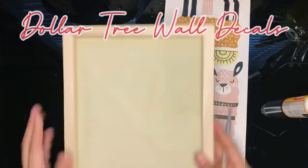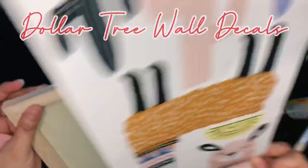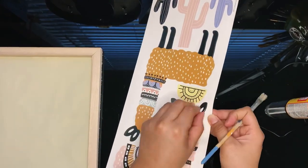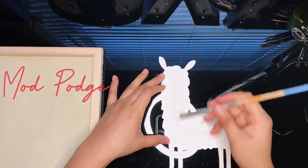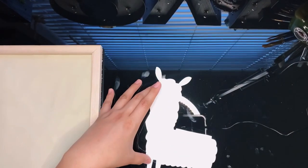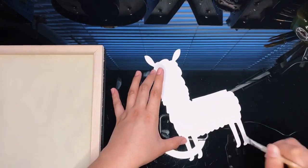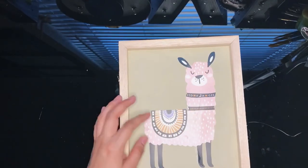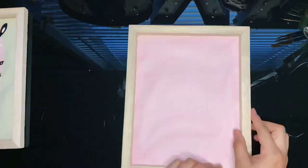I found these cute llama wall decals at Dollar Tree, and I've seen them carry different ones and different designs. This is what I'll be using for my wall art. These wall decals are self-adhesive, but I'm going to add some Mod Podge so it glues down better. You can also seal with Mod Podge once done for extra protection.